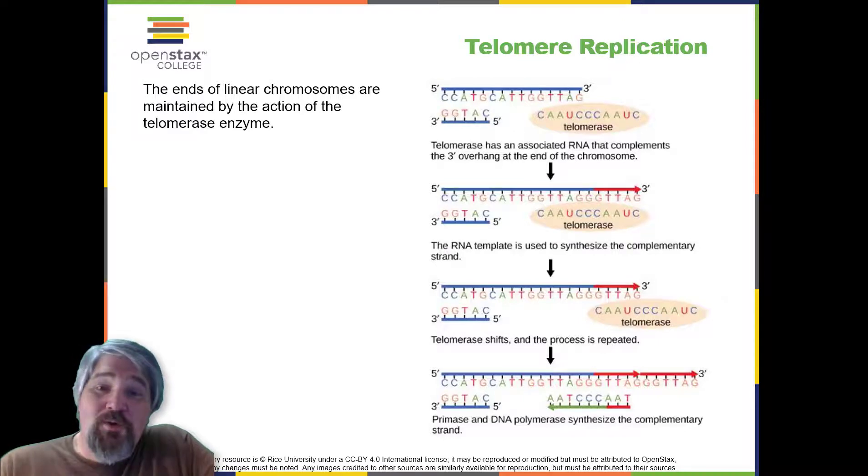The ends of the linear chromosomes are known as telomeres, and have repetitive sequences that do not code for a particular gene. As a consequence, it is telomeres that are shortened with each round of DNA replication instead of genes. For example, in humans, a six base pair sequence, TTA-GGG, is repeated 100 to 1000 times.